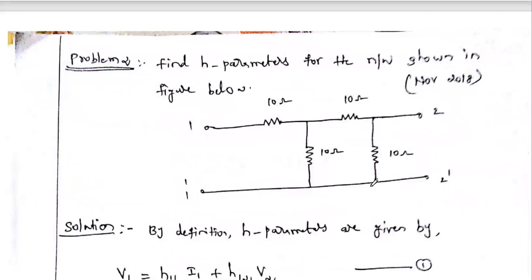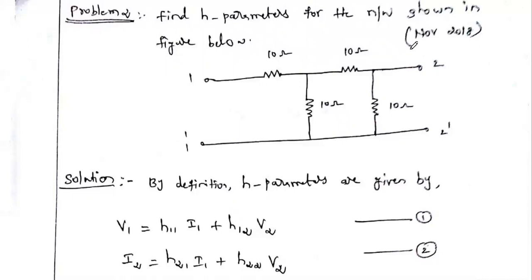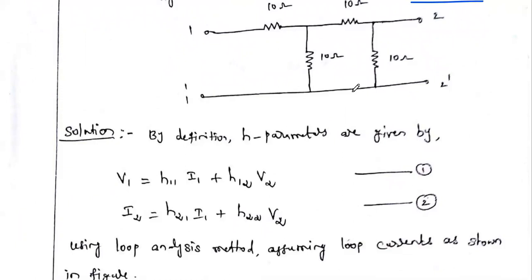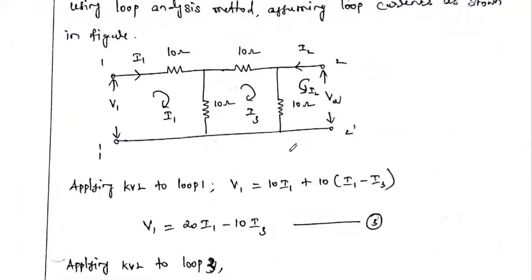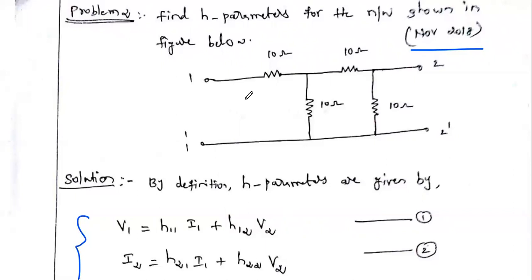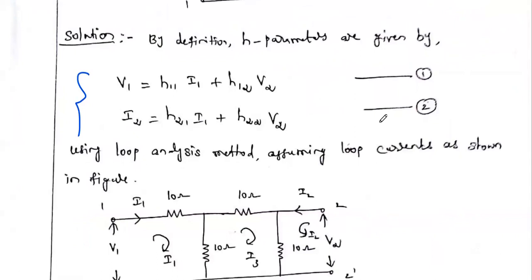The second problem is a November 2018 question: find the H-parameters for the given network. Unlike the previous problem which had two loops, this network has three loops. Our aim is the same: form two equations — v1 and i2 as functions of i1 and v2.